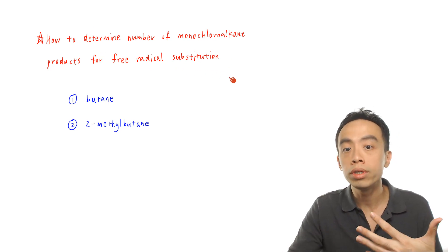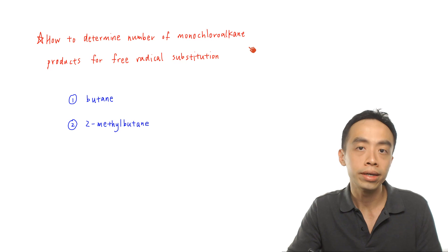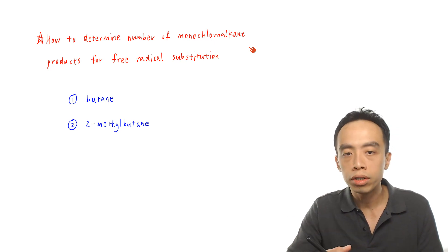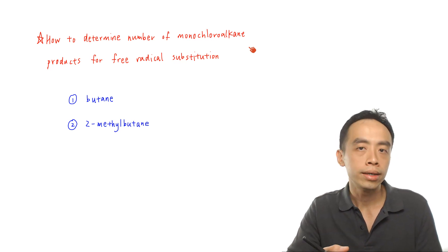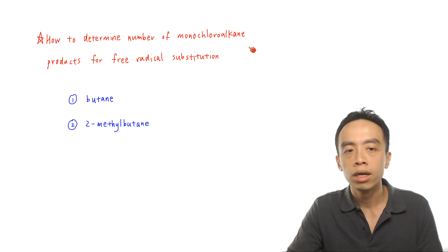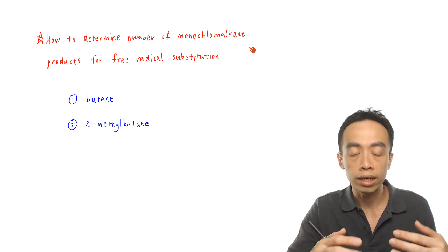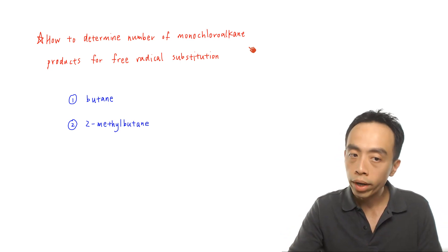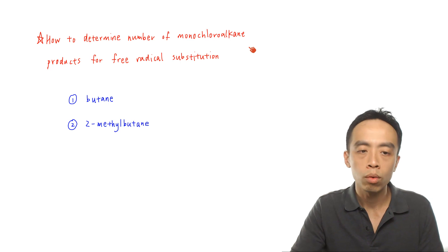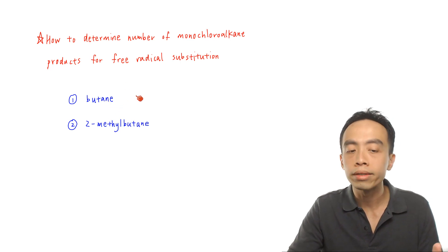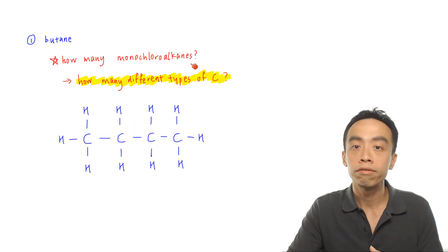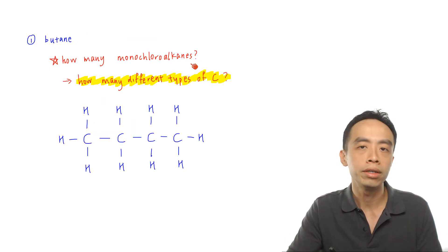We are using mono-chloroalkane as an example. Of course, if you are doing bromination or other halogenation of alkanes, the technique is exactly the same. We will use two examples: one involving butane, and the other involving 2-methylbutane. Let's look at the first example involving butane.